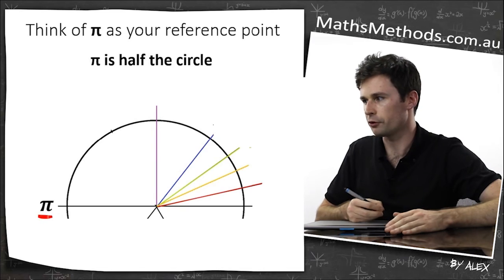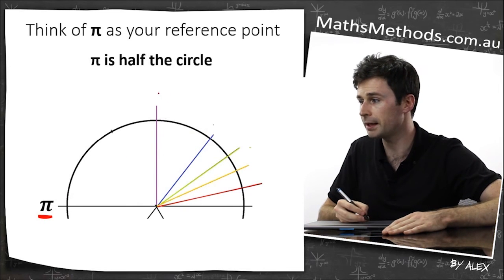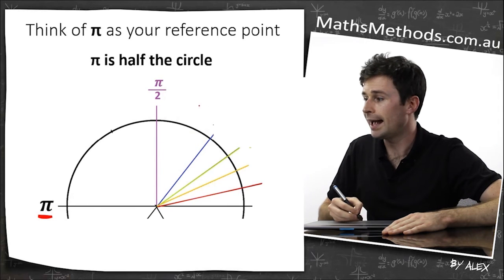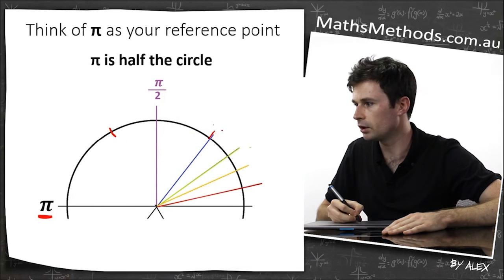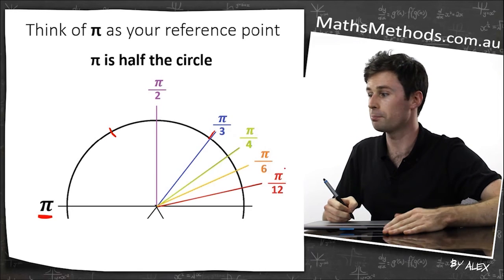Think of pi as your reference point. And so if we split it down the middle to get 90 degrees, that would just be pi divided by 2. And if we split it into thirds, this would just be pi divided by 3. Divide it into quarters, 6, 12, pi divided by 12.